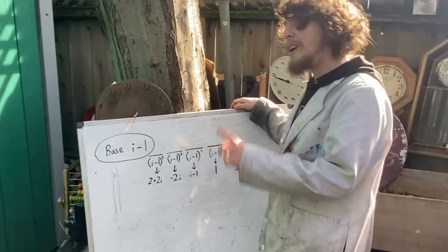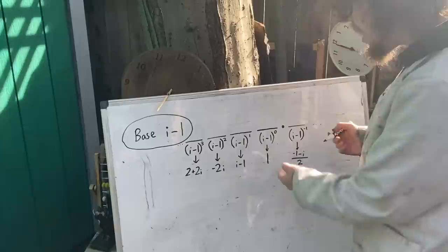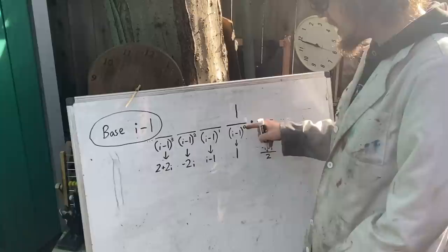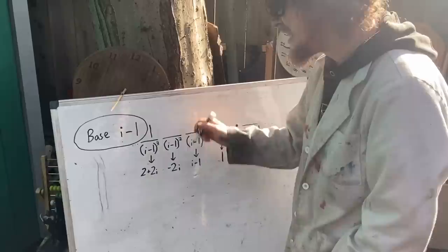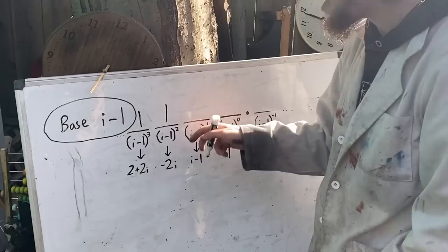Like, if I wanted to make the number 1, I can just put 1 of the ones place, which was that to the zeroth power. But if I wanted to make the number 2, I don't need to introduce the digit 2. I can use 1 of the 2 plus 2i's place, 1 of the negative 2i's place, which cancels out that bit, and I don't need anything else. 1100 would represent the number 2 in this base.